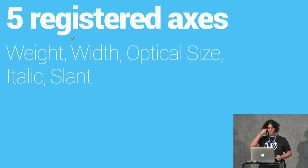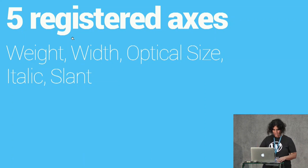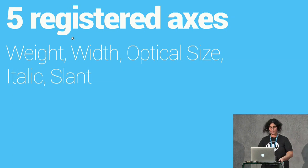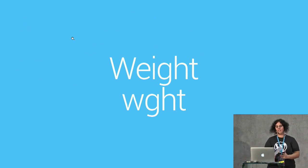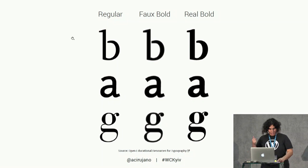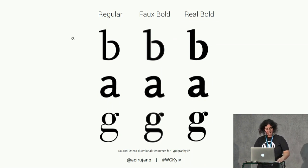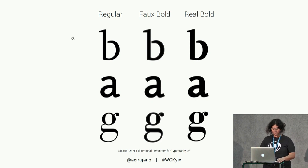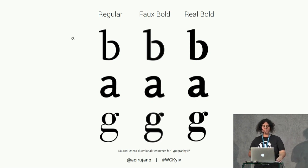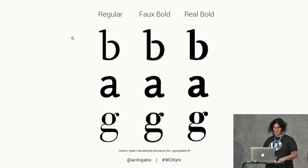Each variable font has different font variations defined by the font designer in the font file. There are five reserved or registered axes: weight, width, optical size, italic, and slant. Let's see the weight axis. Here you can see the difference between a fake bold and a real bold. A fake bold is created by the browser if the font file is missing, and a real bold is designed by the font designer. Using real weights is very important for better legibility and also greater beauty.